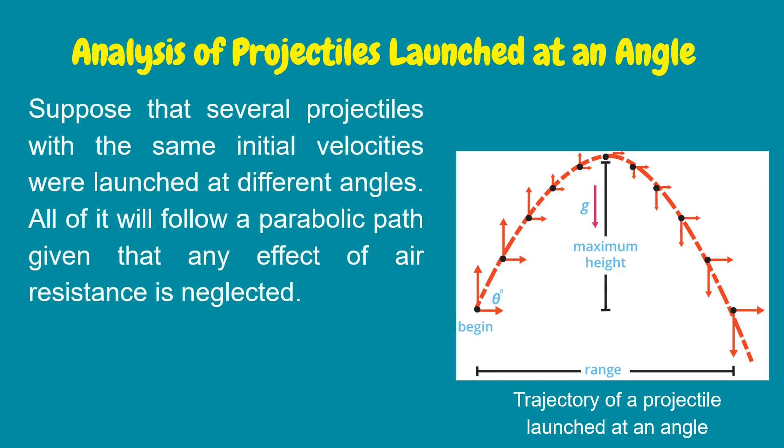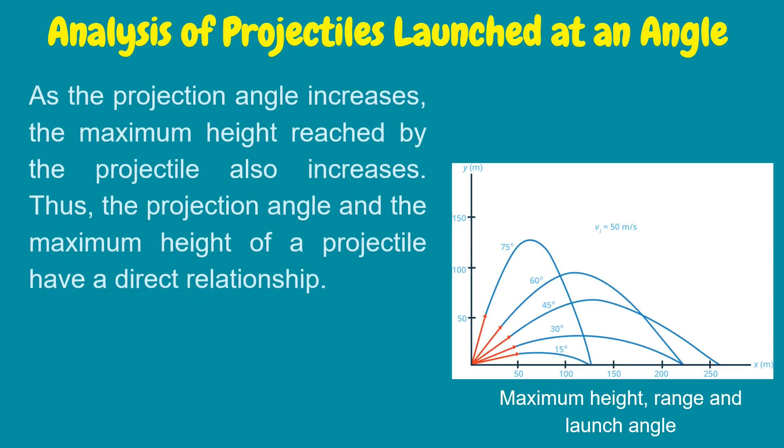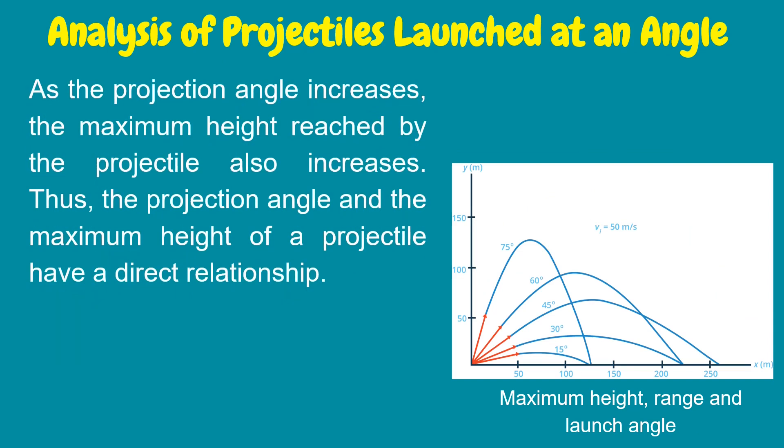Suppose that several projectiles with the same initial velocities were launched at different angles, all will follow a parabolic path given that any effect of air resistance is neglected. As the projectile angle increases, the maximum height reached by the projectile also increases. Thus, the projection angle and the maximum height of a projectile have a direct relationship.